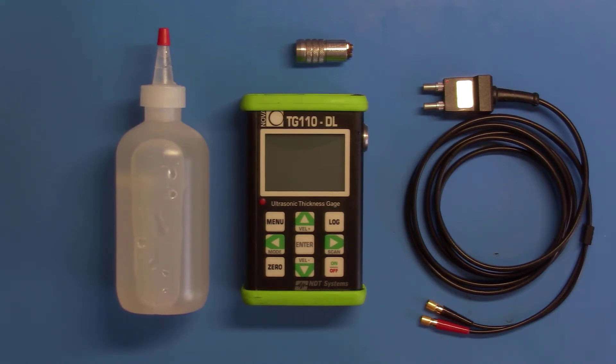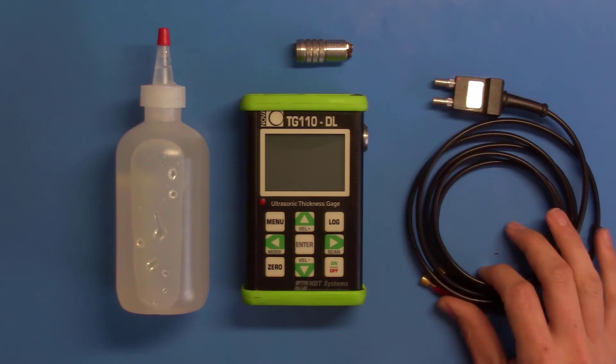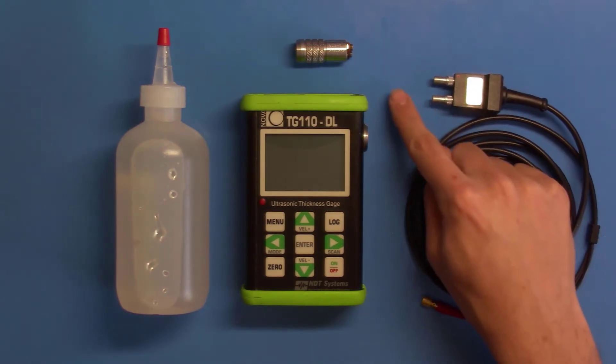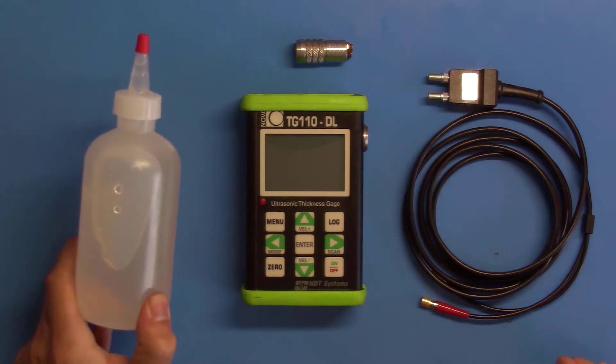First, if you purchased your gauge from the factory, you will receive the gauge itself, the TG110DL, a probe cable, the LMD1, and an ultrasonic probe. This is the TG506. You'll also be given a bottle of couplant.